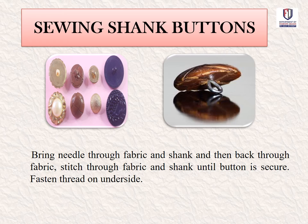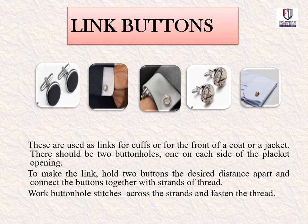For sewing shank buttons, bring the needle through the fabric and shank, then back through the fabric. Stitch through the fabric and shank until the button is secure, then fasten the thread on the underside (wrong side). Link buttons are used at cuffs or the front of a coat or jacket; they should have two buttonholes, one on each side of the placket opening. To make the link, hold two buttons at the desired distance apart, connect them with a strand of thread, and work buttonhole stitches across the strand, then fasten the thread.